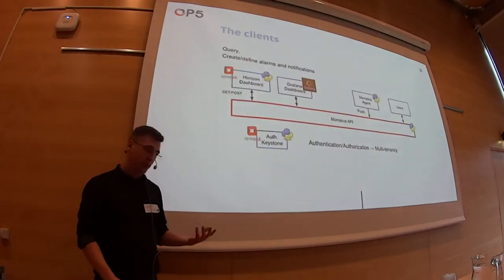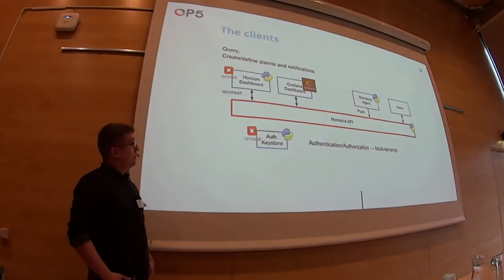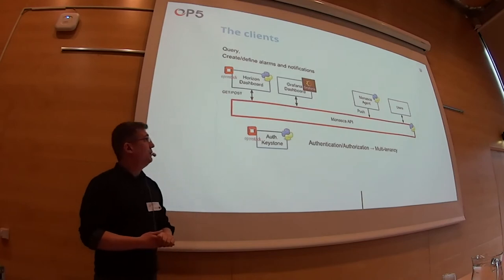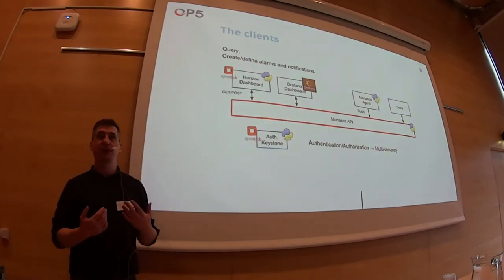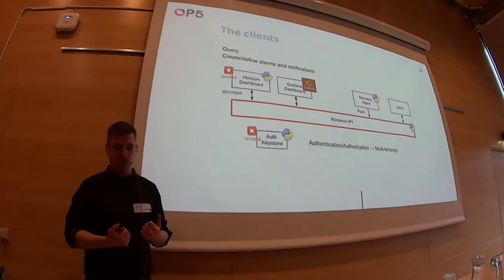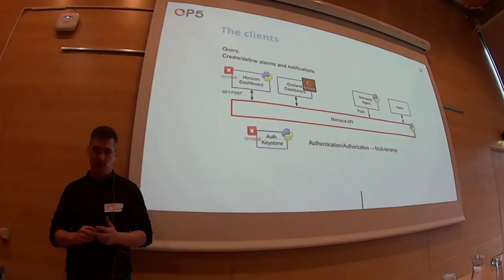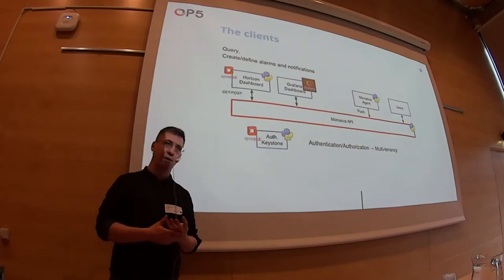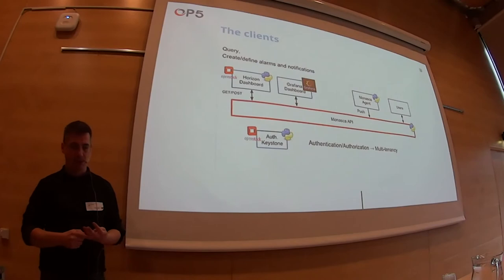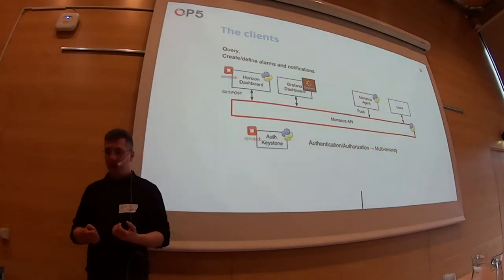If you go further and ask within the stack what Monasca is and how it actually works, you've got different layers. The first layer is what you call the northbound interface — where basically people are going to push information or retrieve information from the system. Monasca exposes a set of APIs, and we can also talk about a DSL — a domain-specific language. The Monasca API has basically four kinds of customer groups or API clients.